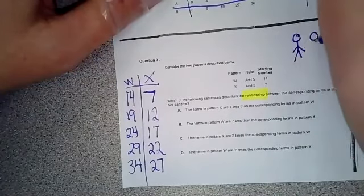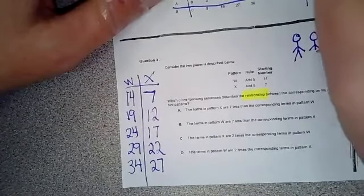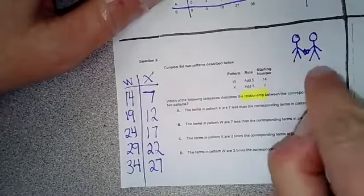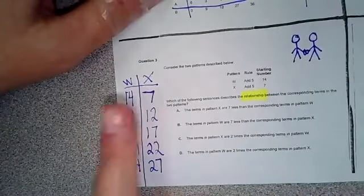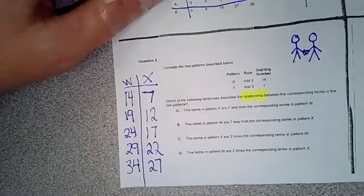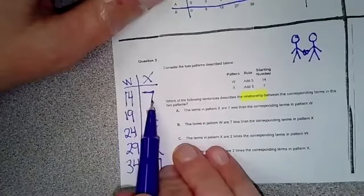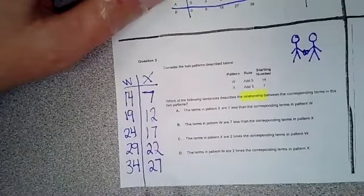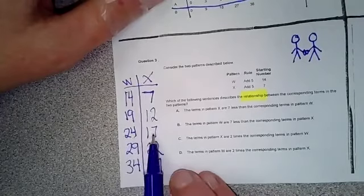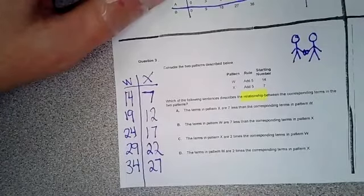Little teenagers in a relationship, when they're in love, they are side by side holding hands. So you are looking for the side by side relationship. So from 14 to 7, what happens every time? From 19 to 12, what happens every time? From 24 to 17, what happens every time?